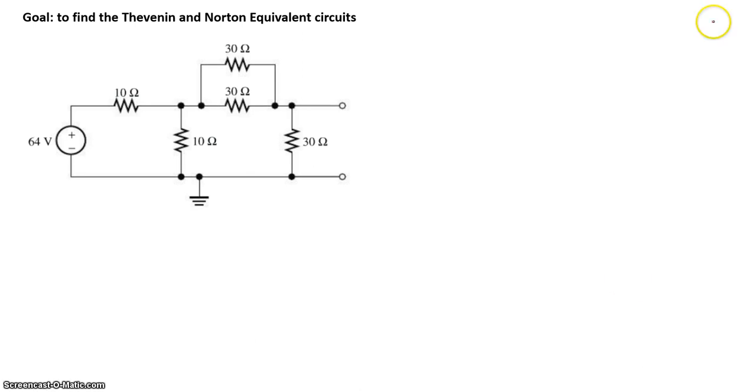Now finding the Thevenin voltage. Again, use your favorite technique. In my case, I'll use nodal analysis. So let me label the nodes. The reference node is already here, so 64 volts across. So that means this point right here is equal to 64 volts. Call this node P and I'll call this node Q.